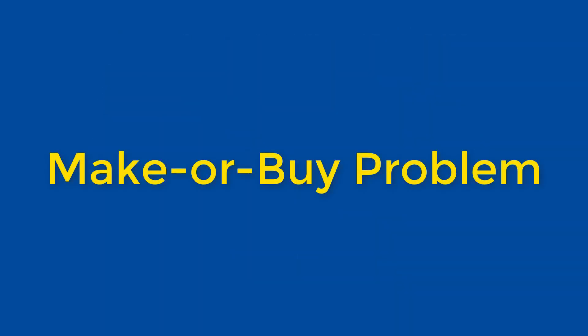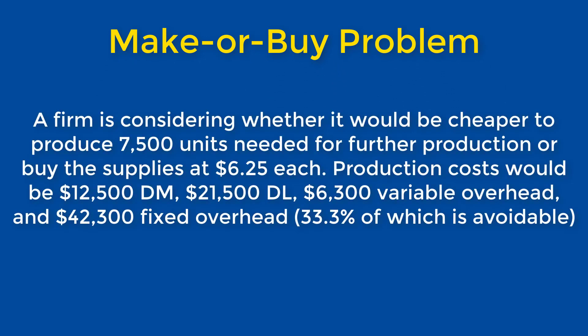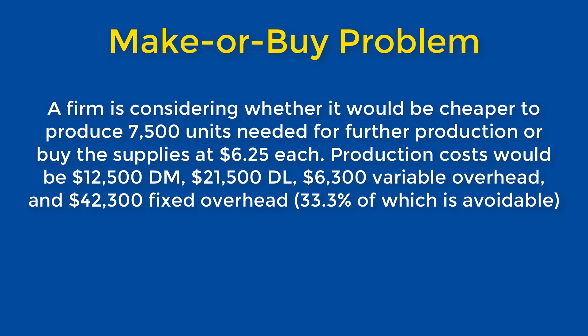Let's now move on to a make or buy problem. A firm is considering whether it would be cheaper to produce 7,500 units it needs for further production or to buy the supplies at $6.25 each. Production costs would be $12,500 in direct materials, $21,500 in direct labor, $6,300 in variable overhead, and $42,300 in fixed overhead, one-third of which is avoidable.